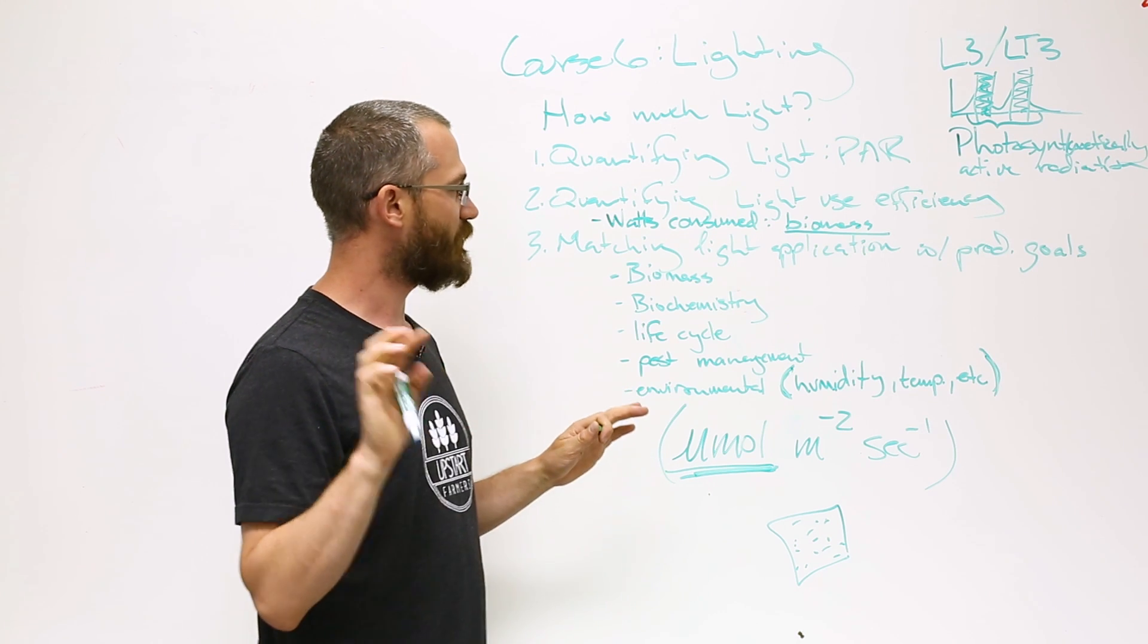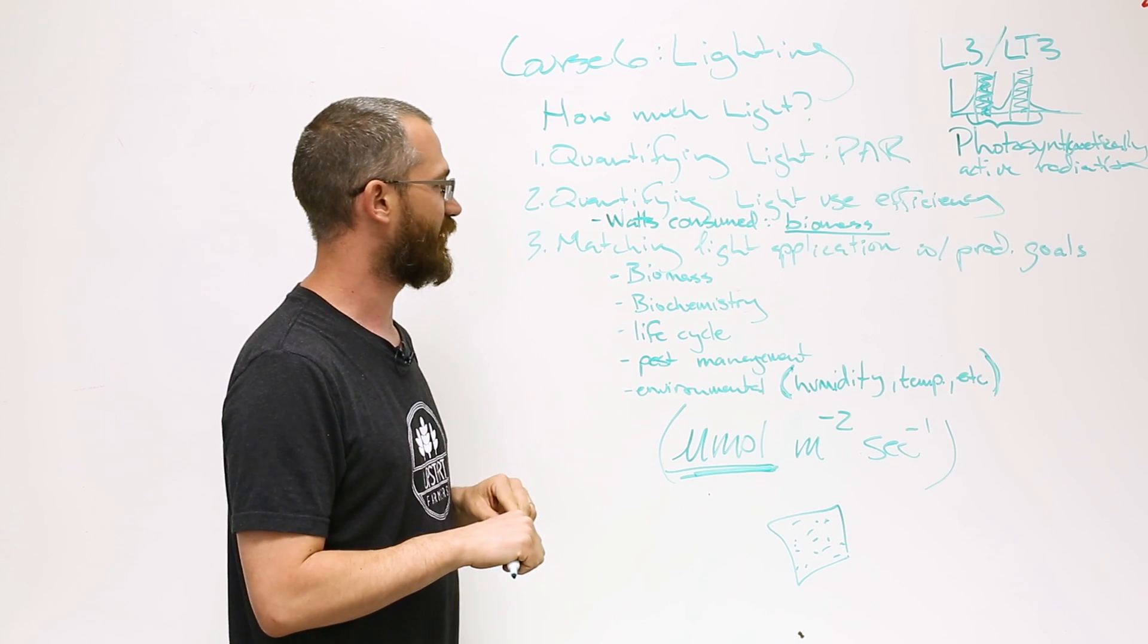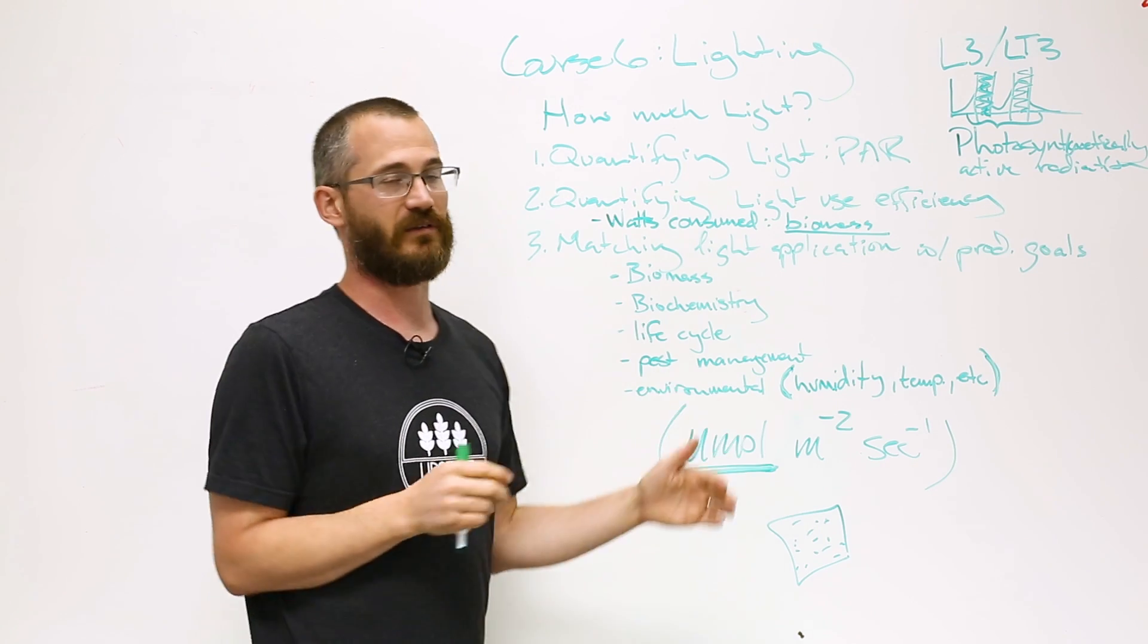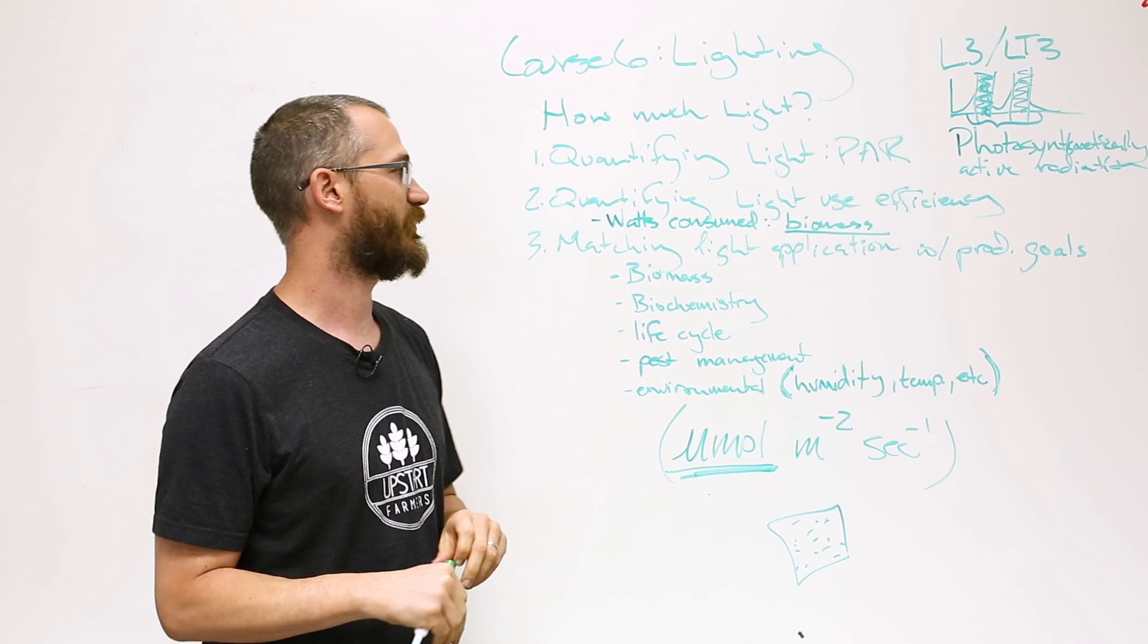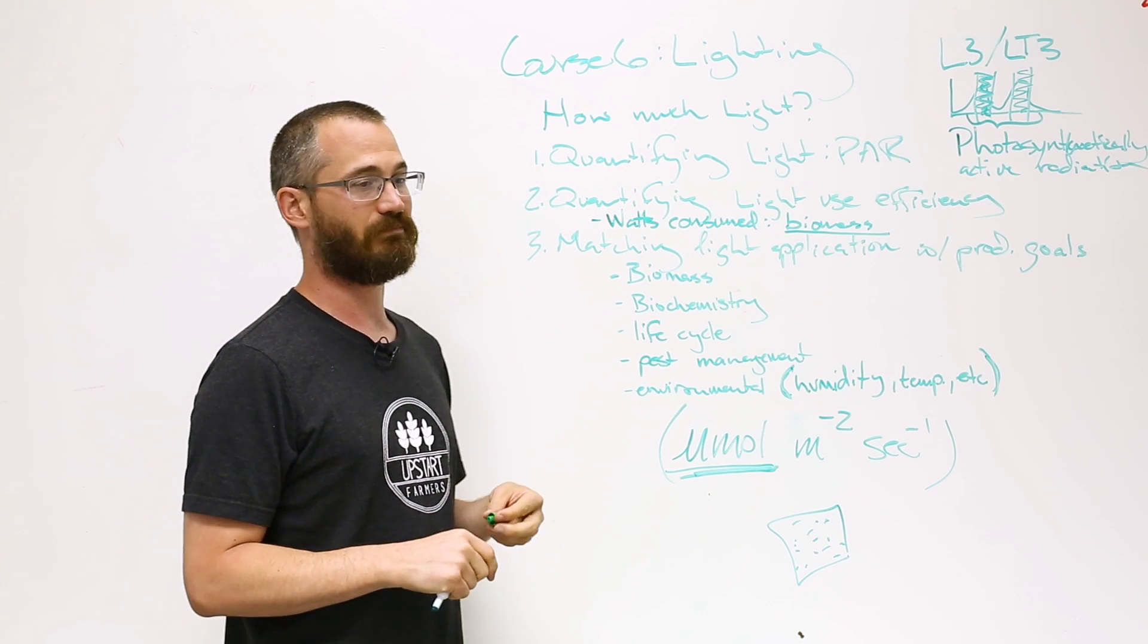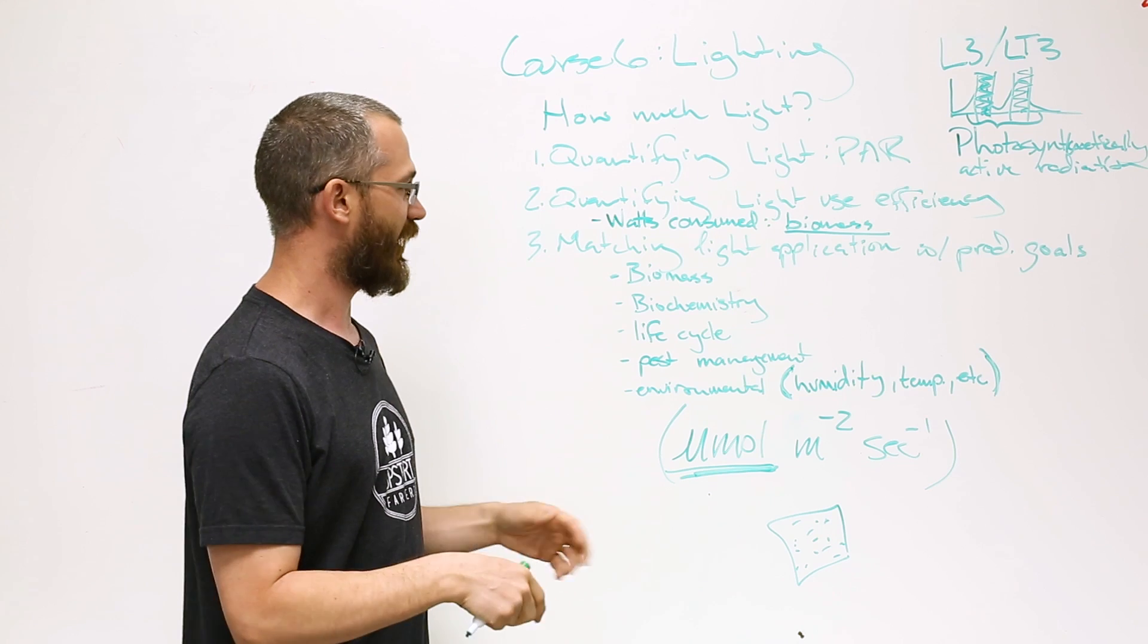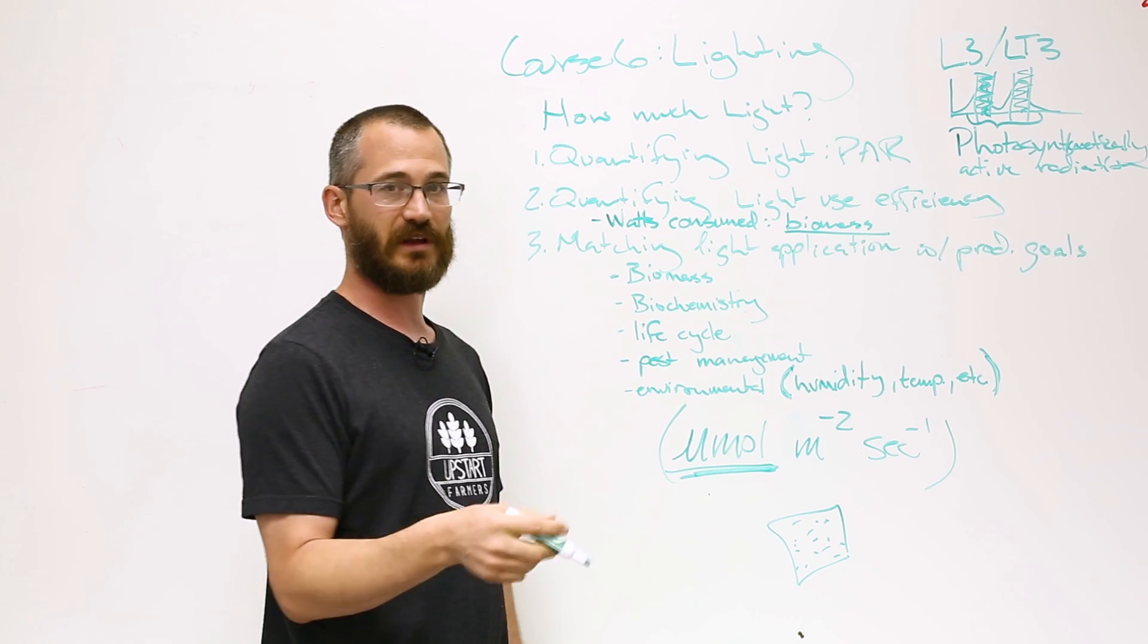Let me say again that this is somewhat crude because there can be other bottlenecks. If you're supplying enough light but not enough CO2, you've introduced another bottleneck. That reduces your light use efficiency.